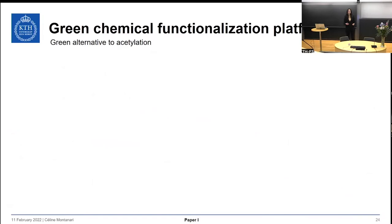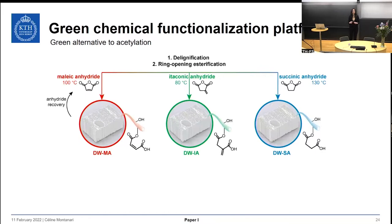Traditionally, chemical treatments such as acetylation have been used to chemically modify wood. However, this treatment requires toxic reactants such as solvents and also provides wood with a dark coloration, which is not ideal for transparent wood. Therefore, in this thesis we developed a green chemical functionalization platform using renewable cyclic anhydrides. We selected three cyclic anhydrides: maleic anhydride, itaconic anhydride, and succinic anhydride.